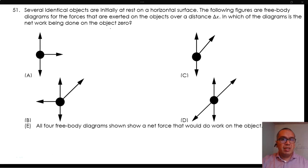21. Several identical objects are initially at rest on a horizontal surface. The following figures are free-body diagrams for the forces that are exerted on the objects over a distance delta x. In which of the diagrams is the net work being done on the object zero?